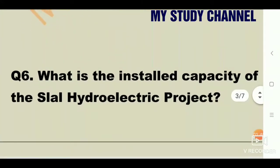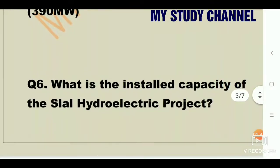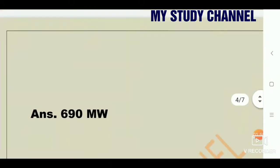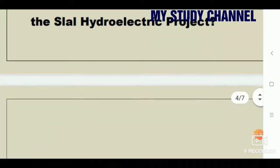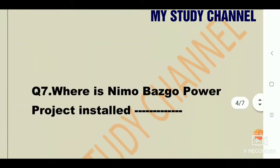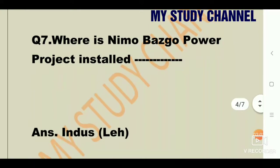Next question: What is the installed capacity of Dulhasti Hydro Electric Project? The answer is 690 megawatt. Next question: Where is Nemo Bazgo Power Project installed? The answer is on the Indus River.